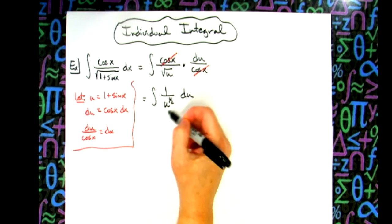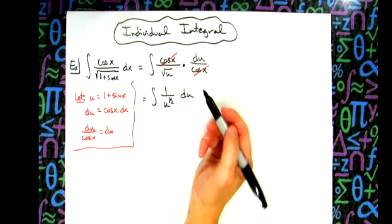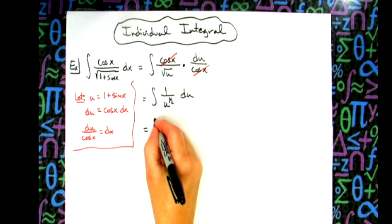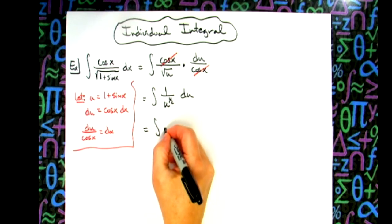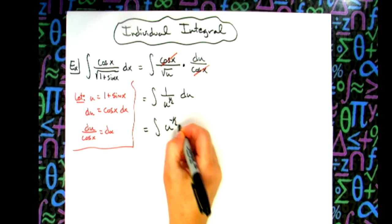I want to take this U to the 1 half, move it to the top, and make it negative using my laws of exponents. So I'll have the integral of U to the negative 1 half du.